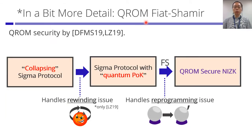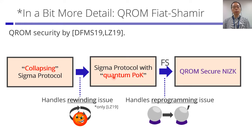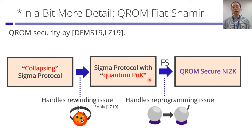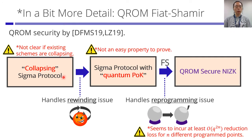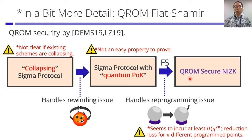The QROM-secure Fiat-Shamir transform was shown by two groups in 2019. They start with a collapsing sigma protocol. In the first step, using a rewinding argument, they transform it into a sigma protocol with a quantum proof of knowledge, where the adversary is also quantum. In the second step, using a new reprogram technique, they show the Fiat-Shamir transform applies to construct the QROM-secure NIZK. The difficult part is showing existing schemes are collapsing, and the reprogramming step typically incurs additional reduction loss compared to the classical setting.